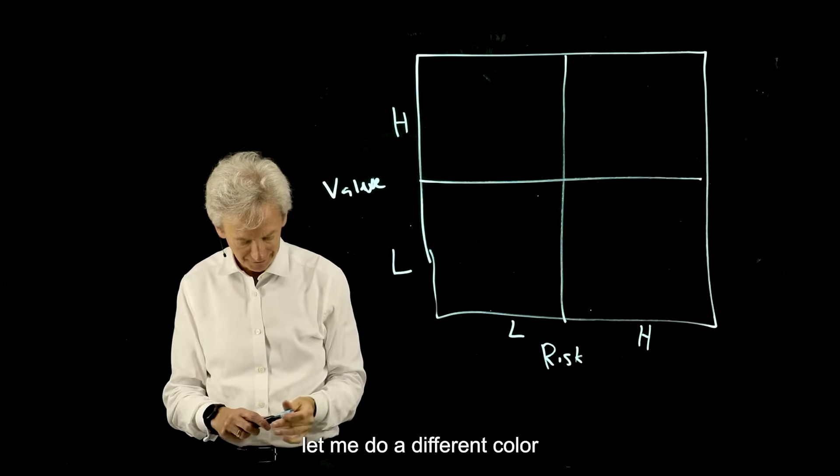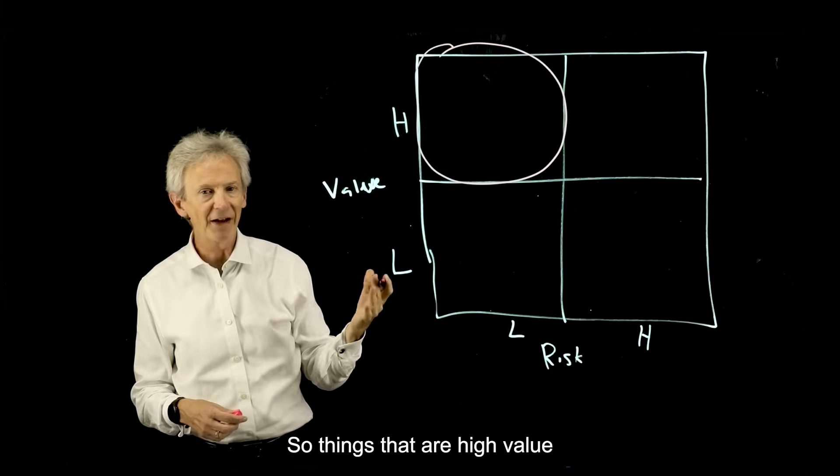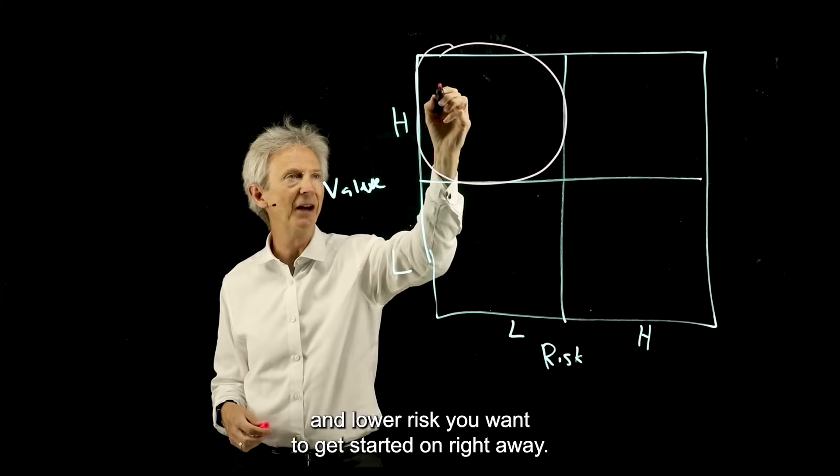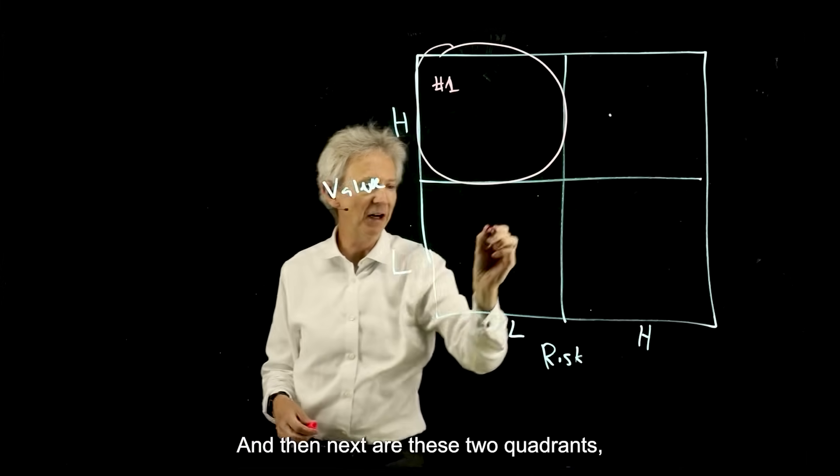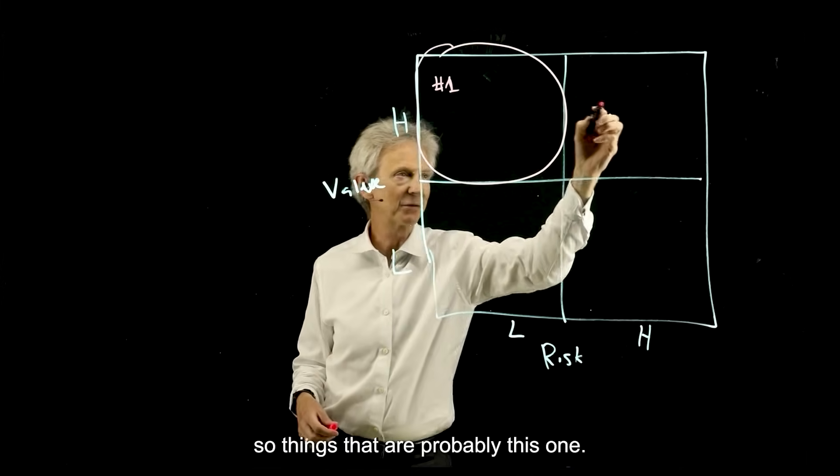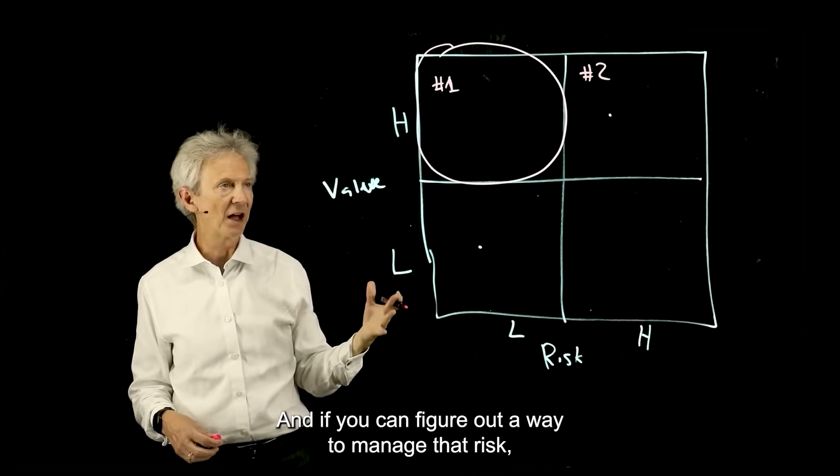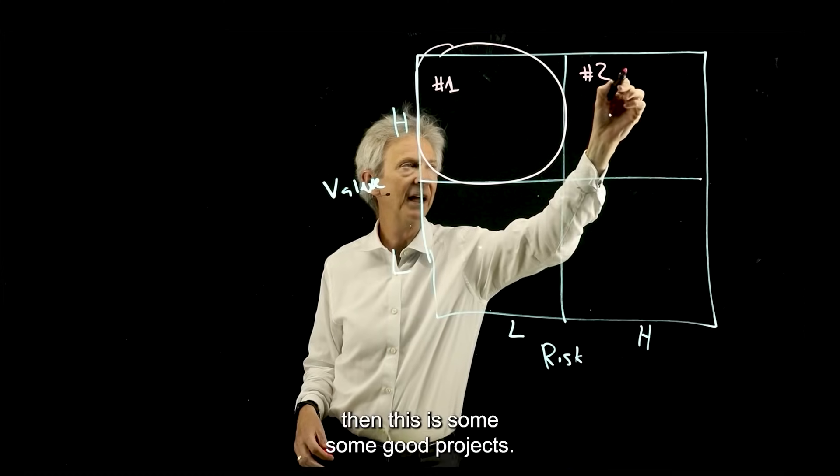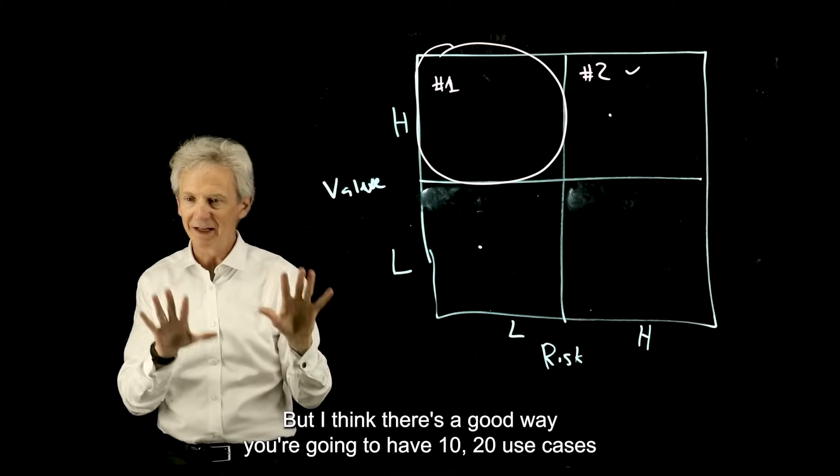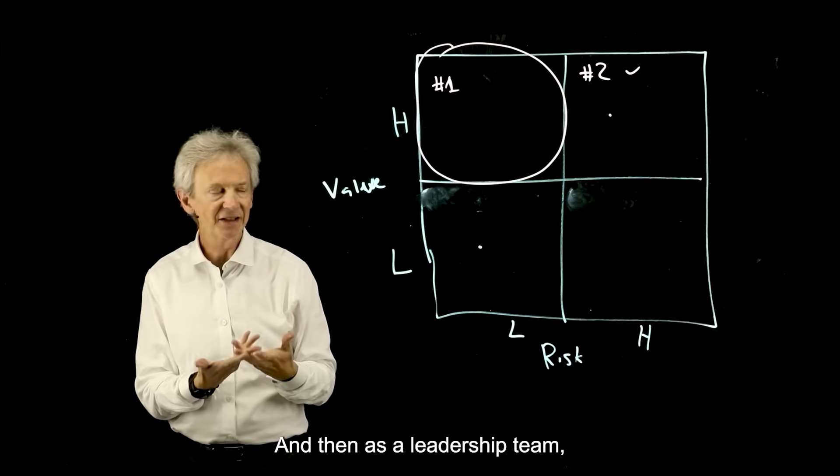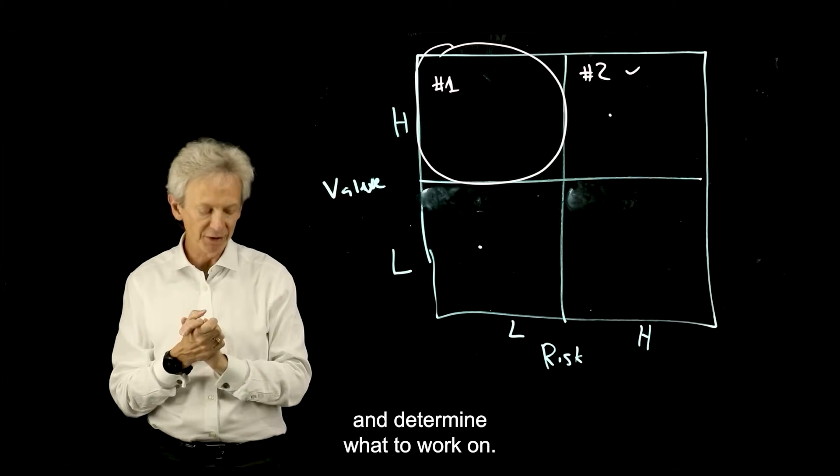As you can imagine, let me do a different color, this is your good quadrant. Things that are high value and lower risk you want to get started on right away. Then next are these two quadrants. Things that are maybe high value but higher risk. If you can figure out a way to manage that risk, then these are some good projects. You're going to have 10, 20 use cases that people want to implement. Then as a leadership team, you can lay these out on this two-by-two and determine what to work on.